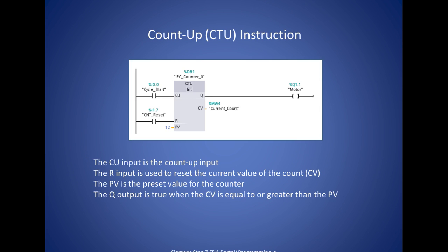We have a count up instruction, or CTU instruction. And here is the input for the up counter to increment the CV tag, which is the count value. And once CV is equal to or greater than PV, the preset value, then the output Q is set to true. So this tag will count up every time this input changes from false to true. And in order to reset this count value, a signal must be given to the reset input.